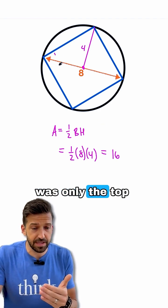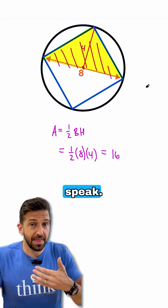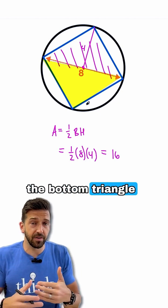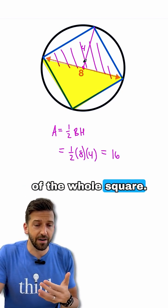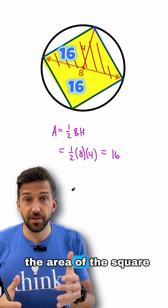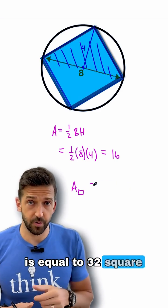Now keep in mind, that was only the top triangle up here, so to speak. That wasn't the whole thing. So what I just have to do is double that to get the bottom triangle and therefore the area of the whole square. So the area of that top triangle is 16, the area of the bottom one is 16, the area of the square is equal to 32 square units.